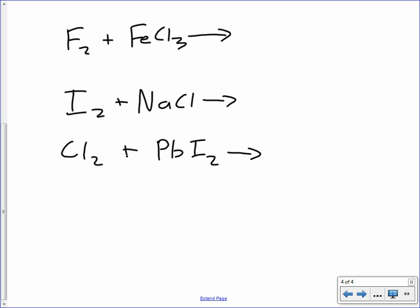Alright. We're going to do just a couple more practice problems and we will be done with this section. So, let's look at fluorine reacting with iron chloride. Let's do iodine reacting with sodium chloride. And let's do chlorine reacting with lead iodide. Three reactions. What I want you to do, pause the video, predict the products, tell me whether or not it will happen, unpause it and see the solutions.